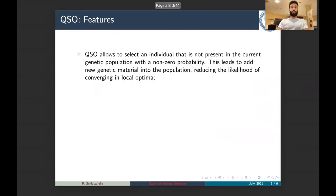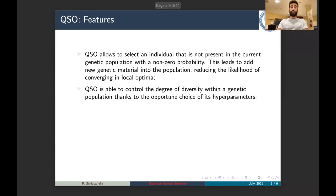QSO has the main peculiarity with respect to other genetic selection operators to introduce new genetic material in the selection procedure. In fact, QSO has the non-zero probability to measure the individuals, to measure basis states that are related to individuals that are not already in the genetic population we are considering. QSO can control the degree of diversity within genetic population thanks to its hyperparameters.